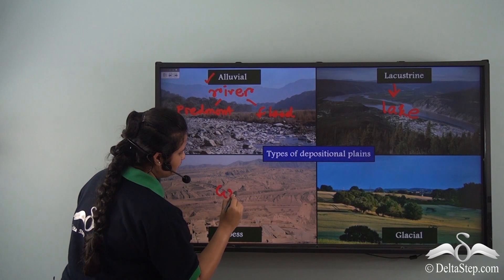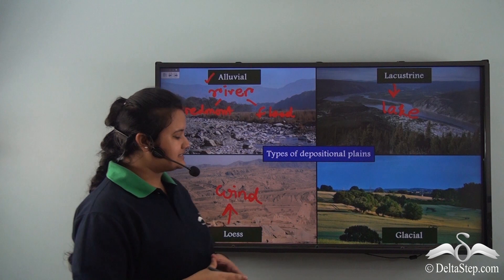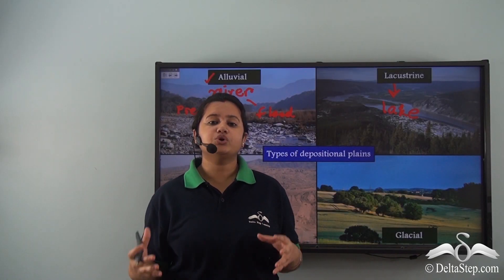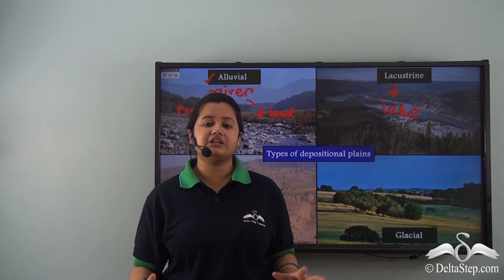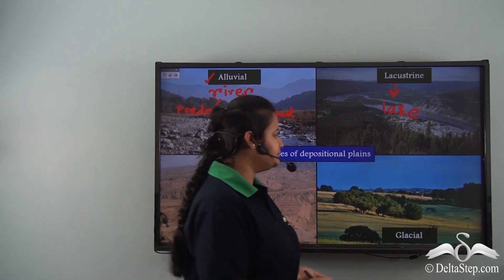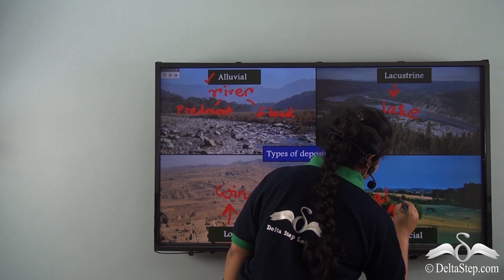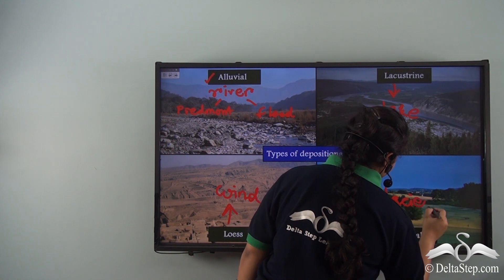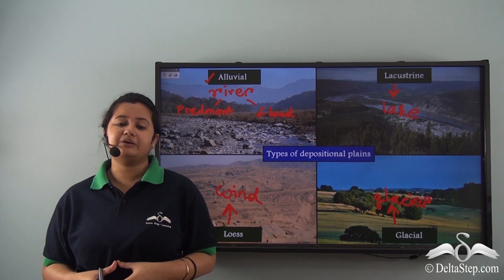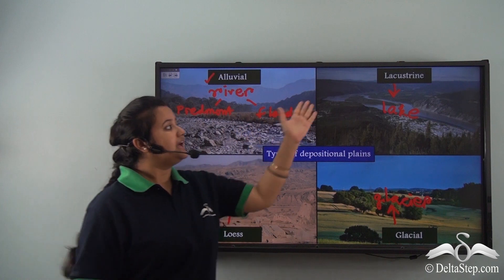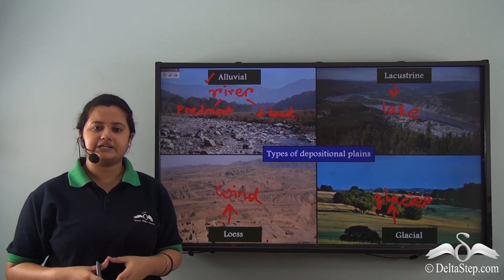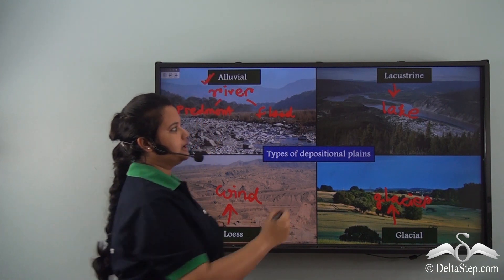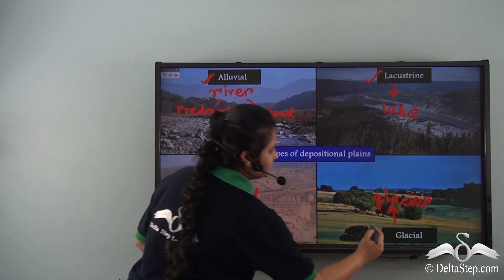Loess plains are formed due to the depositional work of wind. Glacial plains are formed when huge glaciers move over the land surface, erode it, and deposit the eroded debris as they melt. Thus deposition is carried by various natural forces — river, lake, wind, and glacier — and on this basis we can classify depositional plains into alluvial plains, lacustrine plains, loess plains, and glacial plains.